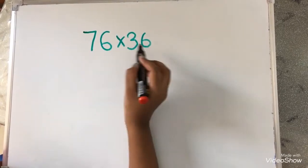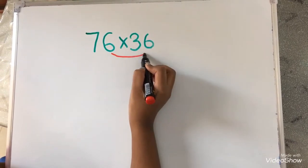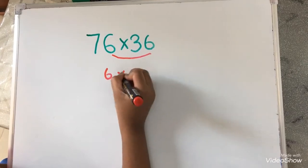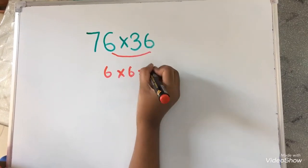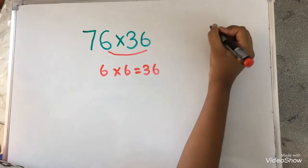First, I am going to multiply the ones digits. So, 6 into 6 equals to 36. I am going to write 36 over here.